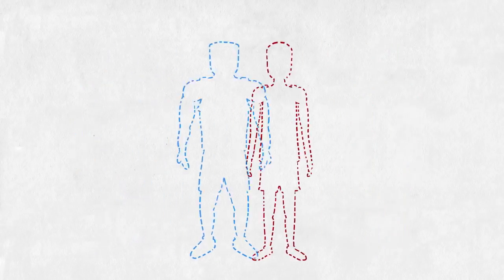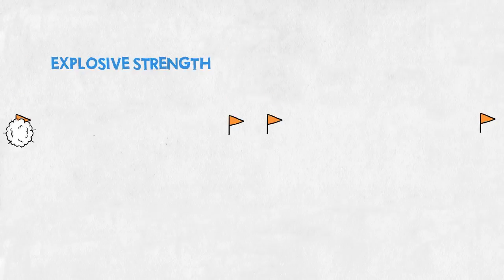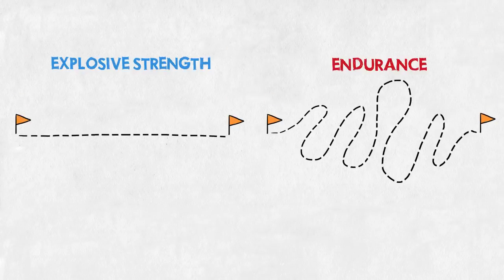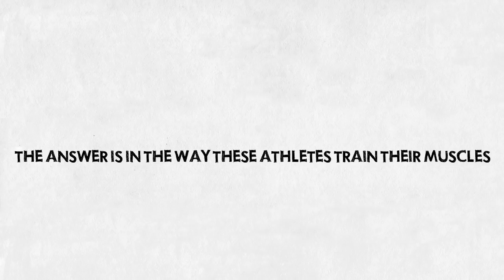They're both runners, so how come they don't look alike? Simple. They practice different sports. It's explosive strength versus endurance. The answer is in the way these athletes train their muscles.